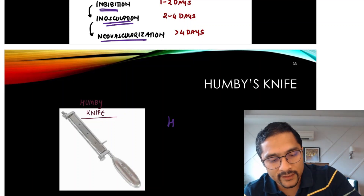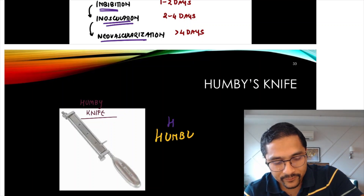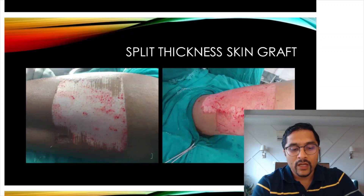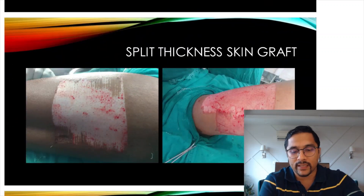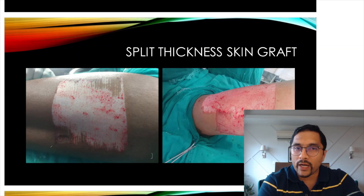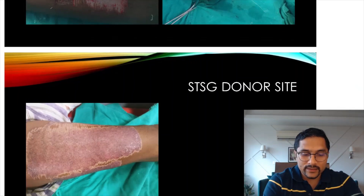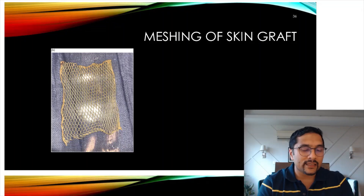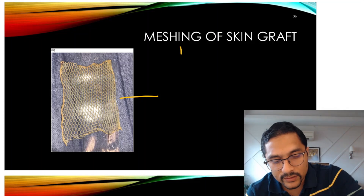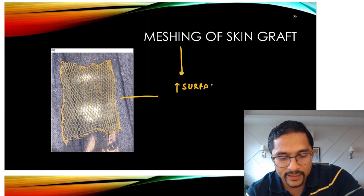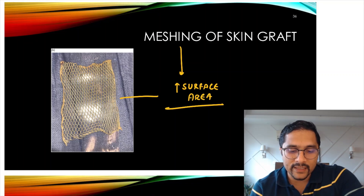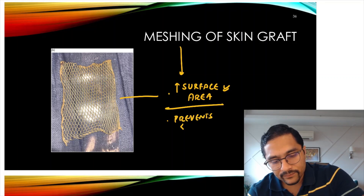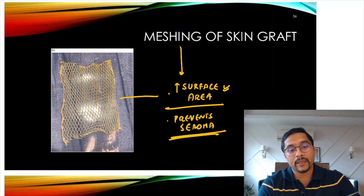The Humby's knife — asked many times in the exam — is used for split thickness skin grafts. Once you raise a split thickness skin graft, you get punctate bleeding points, the area heals spontaneously, and you can reuse the donor site. When we raise a split thickness skin graft, we can make cuts in the graft called meshing — meshing increases the surface area of the graft and prevents seroma formation, preventing fluid accumulation beneath the graft.